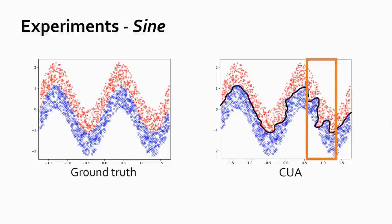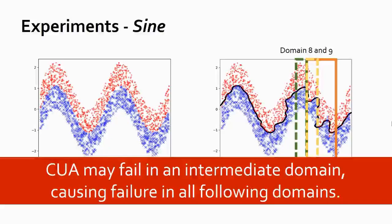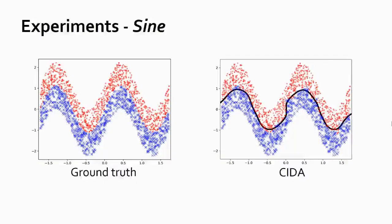This is because CUA adapts incrementally, one by one. Therefore, one failure in some intermediate domain will cause catastrophic failure for all following domains. Specifically here, it adapts from domain 5 to 6, from 6 to 7, from 7 to 8, and it fails badly when adapting from domain 8 to 9, causing catastrophic failure and poor performance for domains in the orange box. In contrast, CIDA can successfully and simultaneously adapt across all domains.